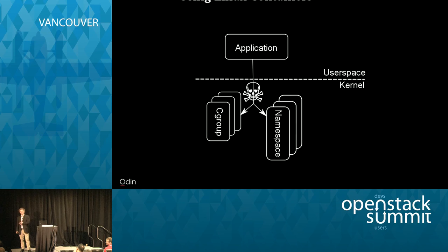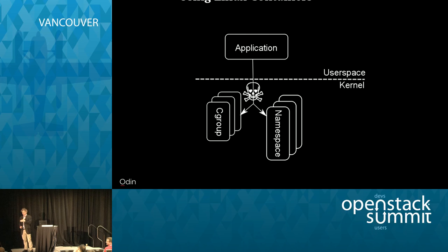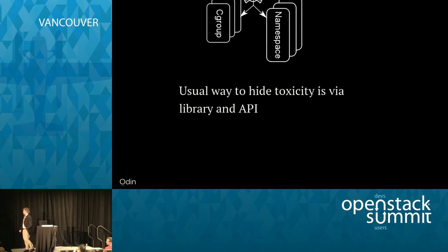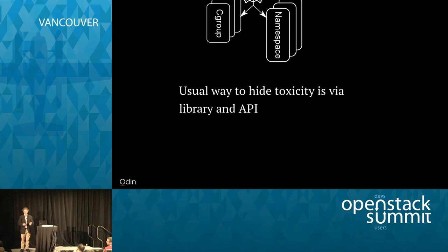Nobody who is not really a container and kernel expert would be able to use them. Systemd is the only container-aware application that actually managed to use them natively. Docker, when it was first brought up, did not manage to use them natively — it used LXC to orchestrate containers in Linux. However, Docker has been trying for a long time to get itself in touch with the native container interfaces. The usual way we hide toxicity in the kernel interface is to invent an API and a library that makes it much more palatable to the end user.